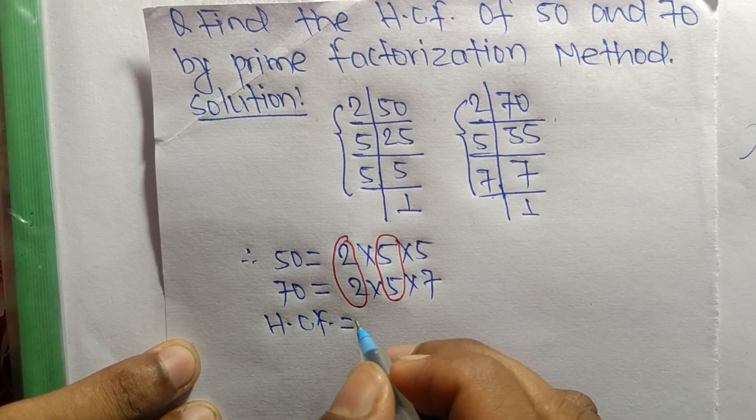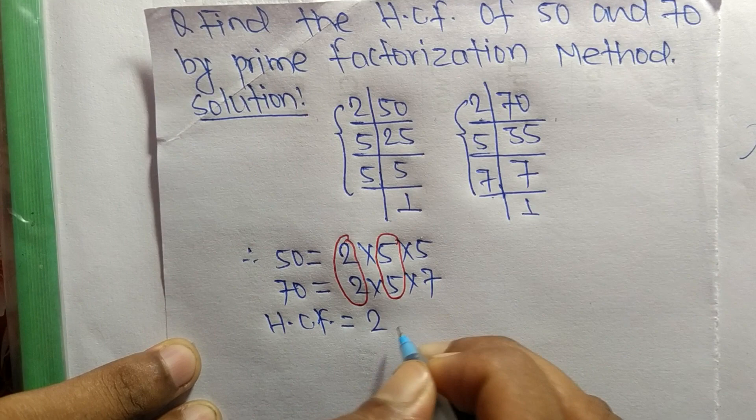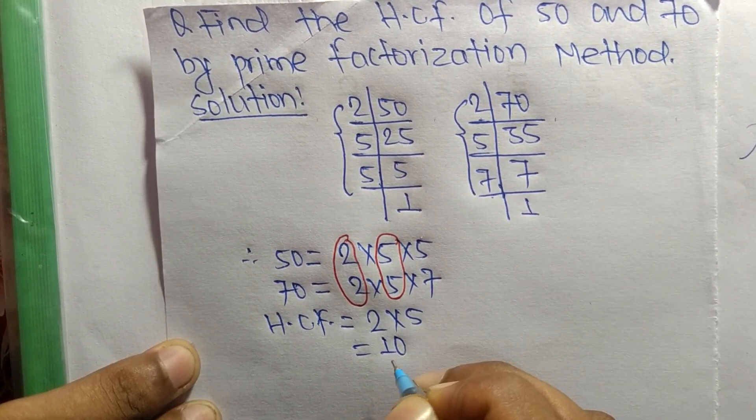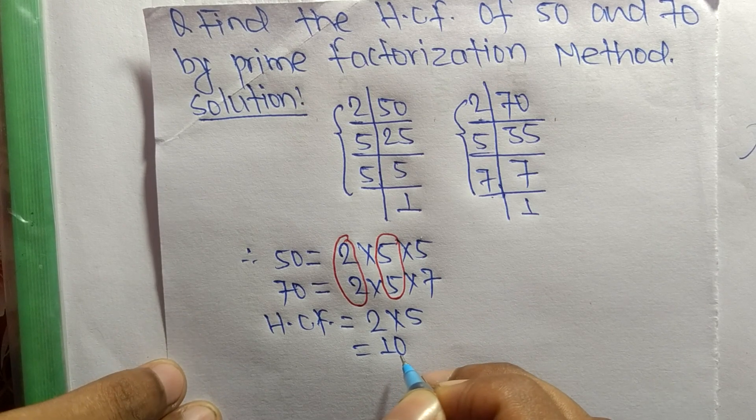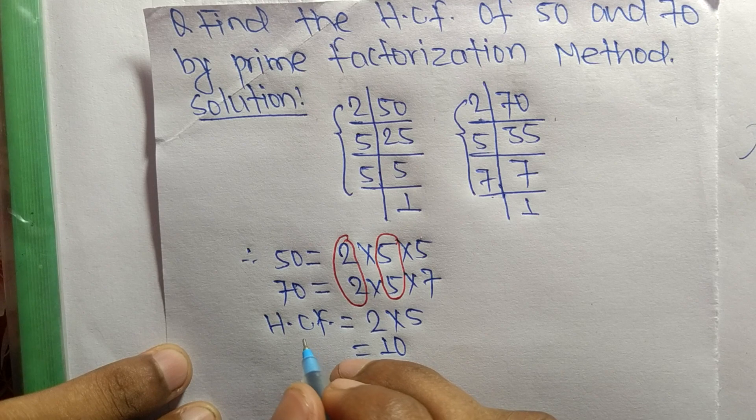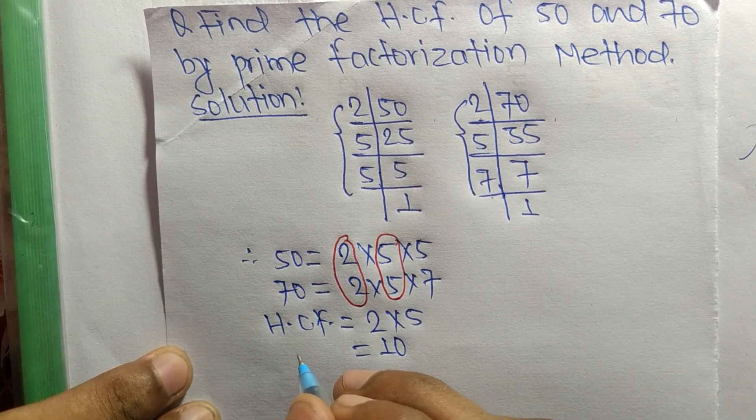equal to the product of common factors, which are 2 and 5. So 2 times 5 equals 10. So 10 is the HCF of 50 and 70. So this much for today and thanks for watching.